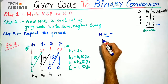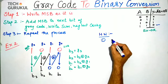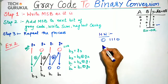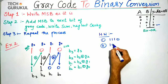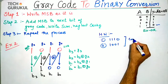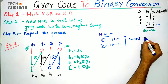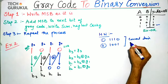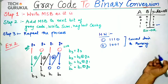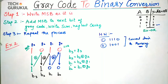Now, homework problems. First: convert gray code 1, 1, 1, 1, 0 to binary. Second: convert gray code 1, 0, 0, 1 to binary. If you have any doubt, you can write in the comment box. That's all for this presentation. Thank you.